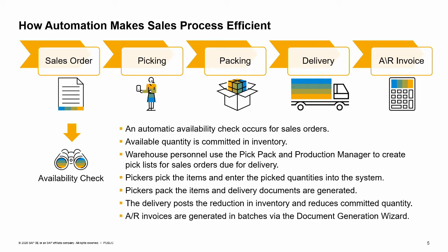Pickers pick the items from warehouse shelves and enter the picked quantities into the system. Pickers create packages for the items with packing lists and delivery documents generated via the pick-pack and production manager. The delivery posts the reduction in inventory and reduces the committed quantity from the sales order. After the items are shipped, AR invoices are generated in batched billing runs via the document generation wizard.